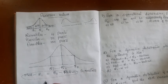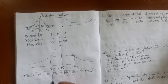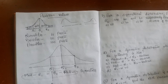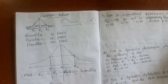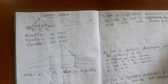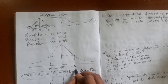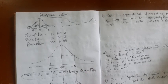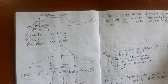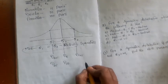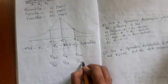Q1 covers 25% of the observations. In terms of deciles, Q1 corresponds to D2.5, Q2 corresponds to D5, and Q3 corresponds to D7.5. In terms of percentiles, Q1 is P25, Q2 is P50, and Q3 is P75.